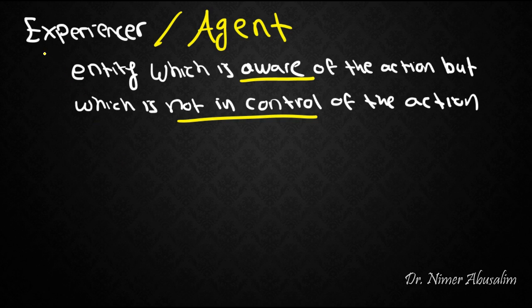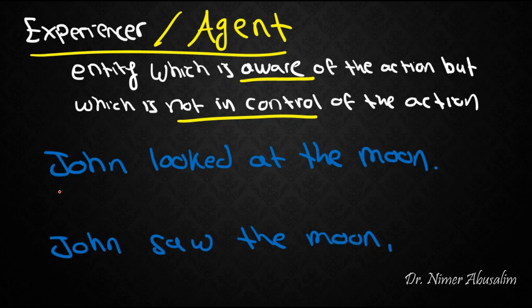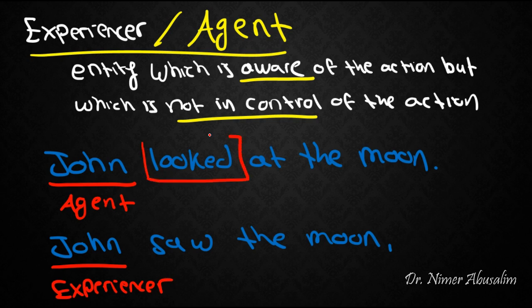Here's a good example to show you the difference between an agent and experiencer. We could say 'John looked at the moon' but also say 'John saw the moon.' Now in this one, John is an agent, and in this one, John is an experiencer.